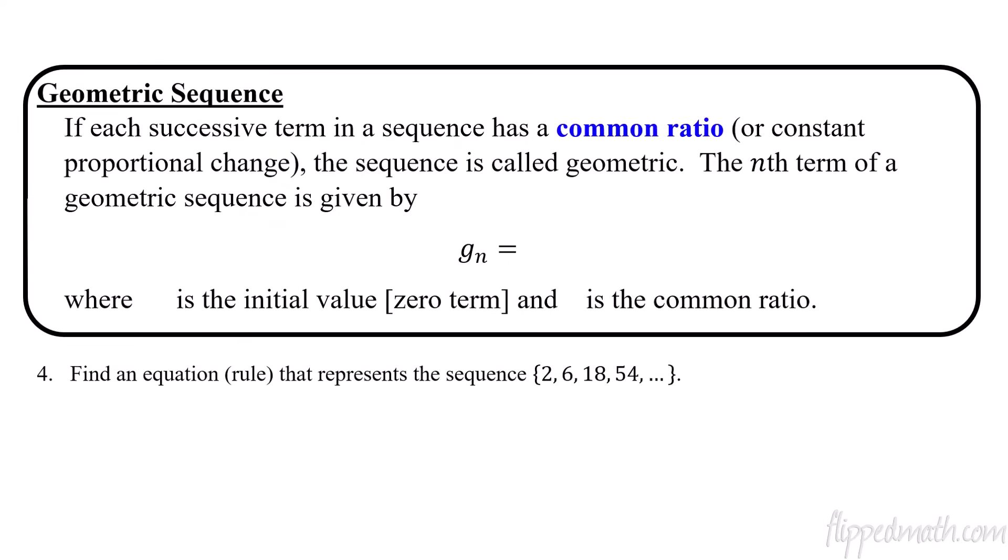Next up, we have the geometric sequences. So geometric sequences, similar to arithmetic, except instead of adding something, we're going to be multiplying something. So what we do is we have this thing called a common ratio, not a common difference, but a common ratio. It's a ratio between two terms. Or another way of talking about it is a constant proportional change. All right. So we call this a geometric.